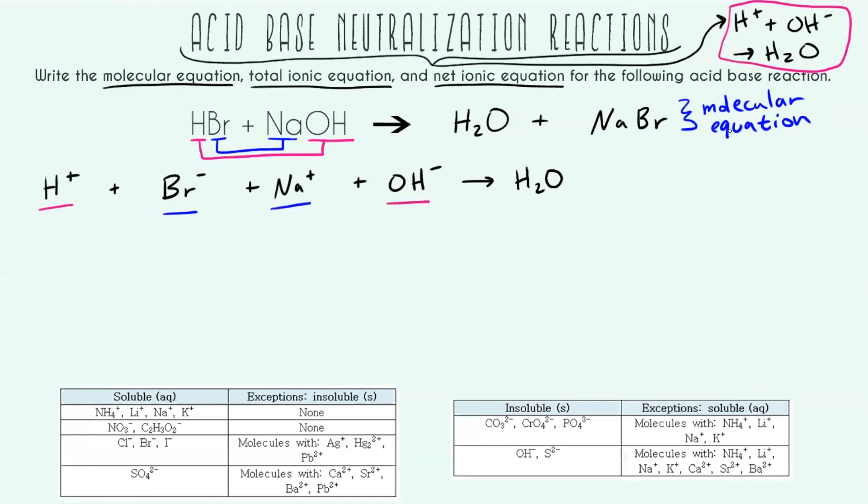Now to see what's going to happen with sodium and bromine, we've got to check out our solubility charts. Looking up sodium, we can see that that is going to be a soluble ion, and it doesn't actually have any exceptions. So we're definitely going to have sodium bromide be soluble. We can also double check this by looking up bromide and seeing that that's also soluble, and its only exceptions don't include sodium.